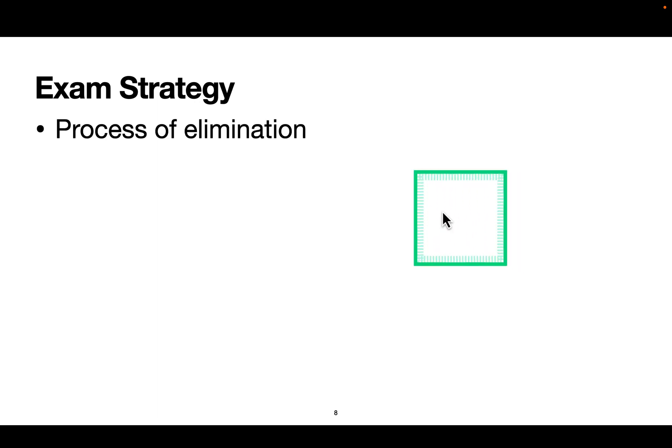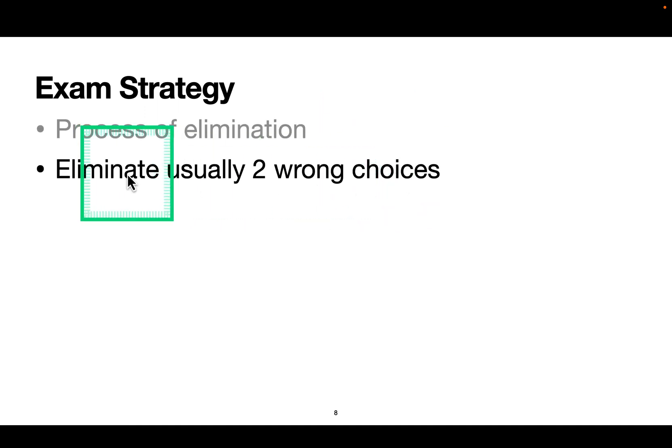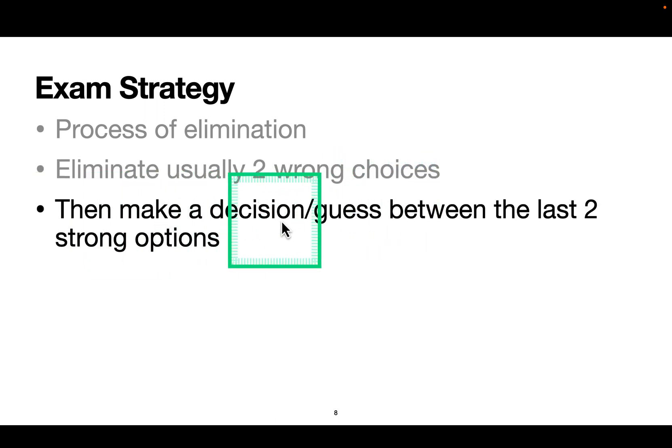My exam strategy: I do a process of elimination. Most questions have four choices and I have to pick one. I'll quickly glance through, go through the question, then read through the choices. First I will eliminate two wrong choices which will be obvious in a lot of questions. Once I have eliminated two, for example A, B, C, D, in my mind I know B and C are silly or distracting, so I'll read through A and D again and again quickly, then pick the best one. Then make a decision or guess between the last two strong options. Just pick one, and if I have to guess, I'll pick the one which I feel is most suitable.